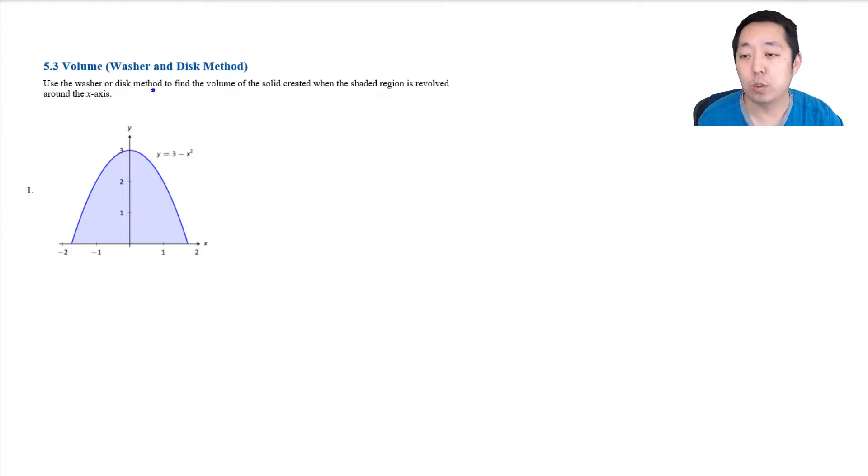We're going to use the washer disk method to find the volume of the solid created when the shaded region is revolved around the x-axis. So what I want to do here is I want to create my representative rectangle and then decide what it's being revolved around. It's going to be revolved around the x-axis, and it's going to create a three-dimensional shape disk like this that has this kind of thickness on it.